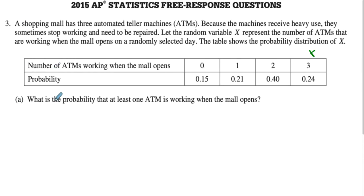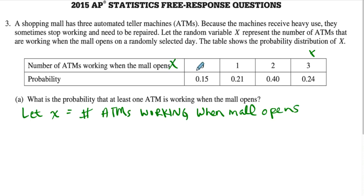What is the probability that at least one of the ATMs is working when the mall opens? Looking at the chart we have here, at least one means one or more. So let's define a variable — let X equal the number of ATMs working when the mall opens. We want at least one ATM, so that means one is good, two is at least one, and three is at least one.